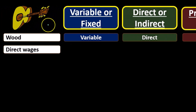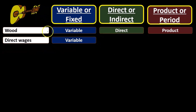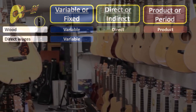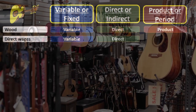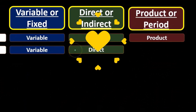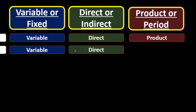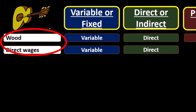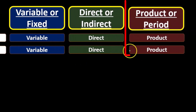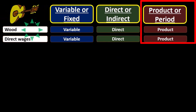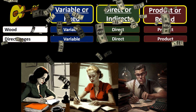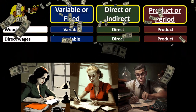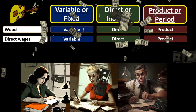If we have direct wages — someone actually making the guitar, being paid to make the guitar — it will once again be variable, because if we make two guitars we would expect the wages to go up at some variable rate. It's going to be direct, because we can apply that person's cost directly to whatever guitars they work on. And it's clearly a product cost because we're working on production. When we actually record the journal entry, instead of wages expense, we're going to debit something like work-in-process inventory — which will seem unusual at first if we're used to automatically treating wages as an expense.